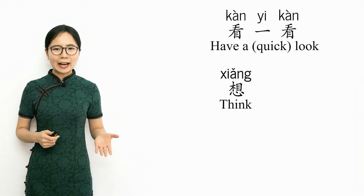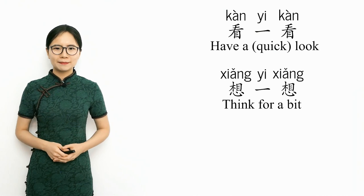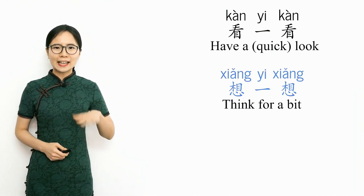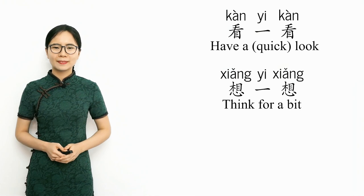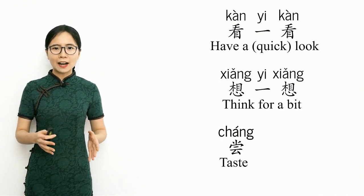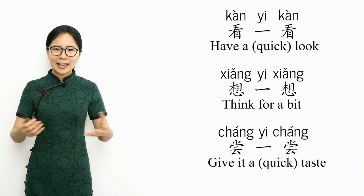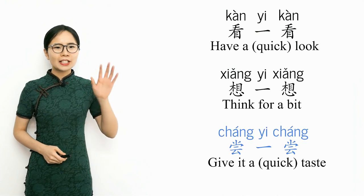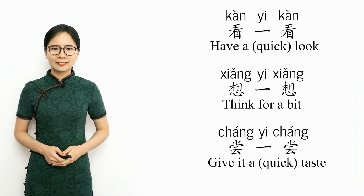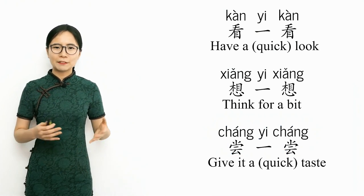Here are a few more examples. The verb xiang means to think. Xiang yi xiang means to think for a bit. Please repeat after me: xiang yi xiang — think for a bit. The verb chang means to taste. Chang yi chang means to give it a quick taste. Please repeat after me: chang yi chang — give it a quick taste.